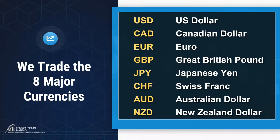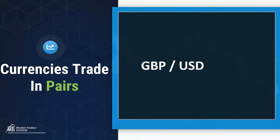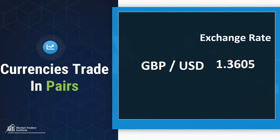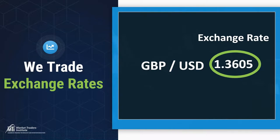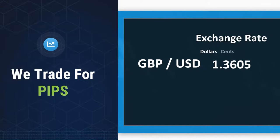Most people say, how do I make money on something that moves less than a penny? Let me show you. Let's say you've got the pound/USD trading at 1.3605. During the day you might have a strong pound or a weak dollar — either way, the exchange rate moves. If it goes from 1.3605 to 1.3695, that's a 90-pip difference. If you bought it low and sold it high — just like anything else — you made 90 pips. Now you know where the pips come from. So what do we got to do? We just got to go get them.